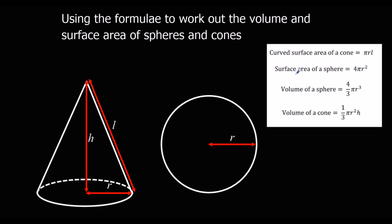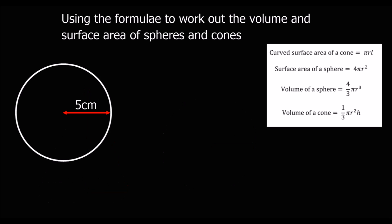With a sphere, the surface area — this is a 3D shape, it looks like a circle but is actually three dimensional like a football — the surface area is 4 pi r squared, and the volume is 4 thirds pi r cubed. We just apply these formulas to work out the volume and surface area.